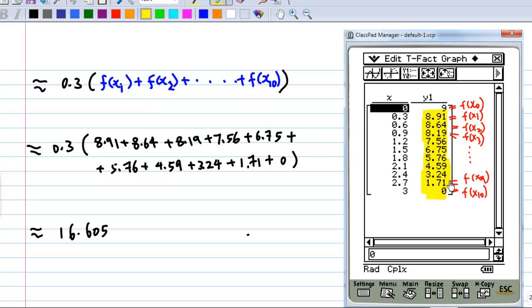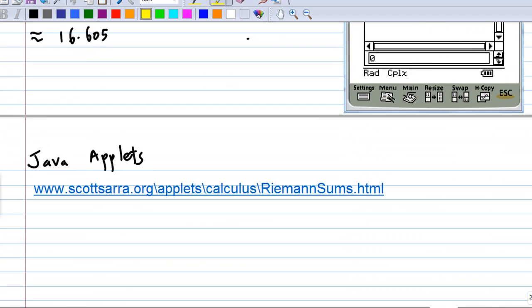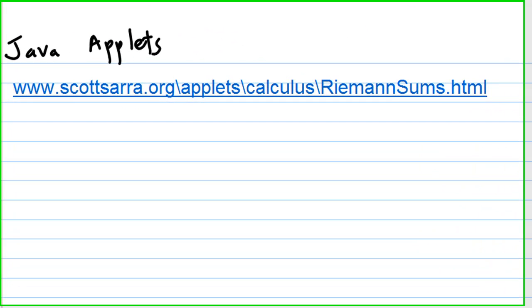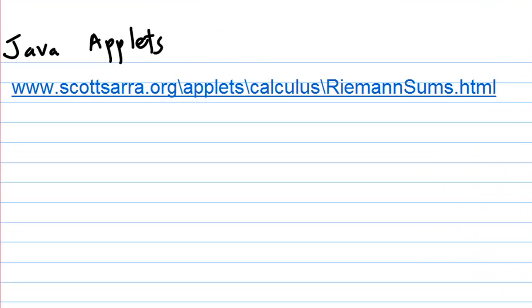The Riemann sum comes out to be 16.605. I can also use the Java applet, which you can find on this site, to calculate the Riemann sum using the right endpoint.